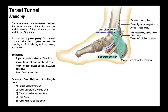The floor of the tarsal tunnel is really just bone — the medial surfaces of the lower tibia, the talus, which is mostly covered up, and the calcaneus. The superior and inferior boundaries provide attachment points for the roof of the tarsal tunnel, which is this green-colored tissue called the flexor retinaculum. It's actually the flexor retinaculum, by virtue of being a roof, that converts this structure into a tunnel, providing a passageway for these structures as they travel between the posterior lower leg and the foot.